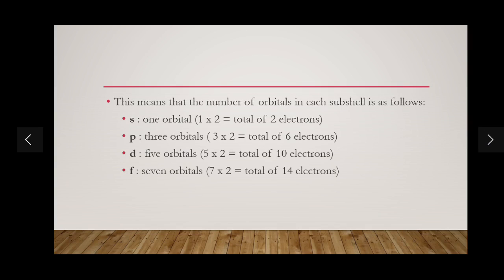The number of orbitals in each subshell is as follows. Each atomic orbital can accommodate a maximum of two electrons. The s subshell contains one orbital, the p subshell contains three orbitals, the d subshell contains five orbitals, and the f subshell contains seven orbitals. Keep that in mind.